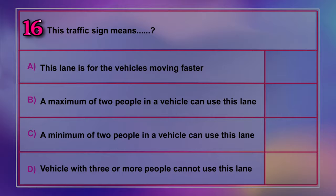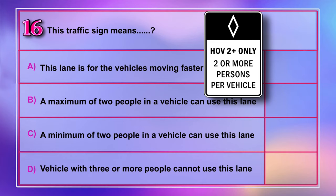Question number 16: This traffic sign means A) this lane is for vehicles moving faster, B) a maximum of two people in a vehicle can use this lane, C) a minimum of two people in a vehicle can use this lane, D) vehicles with three or more people cannot use this lane. Correct answer is C: a minimum of two people in a vehicle can use this lane.